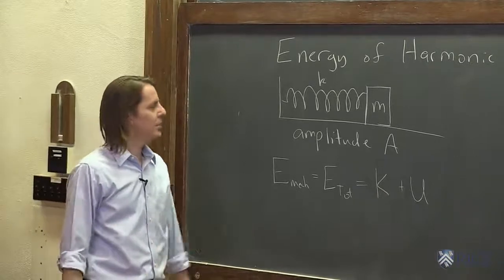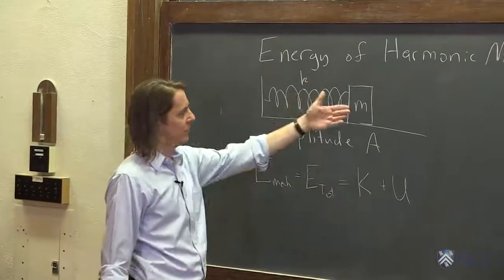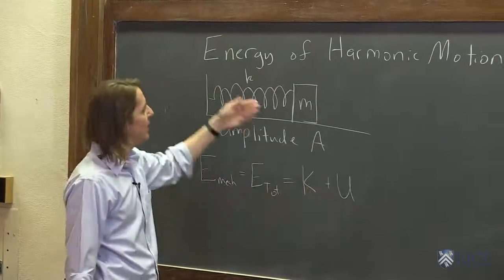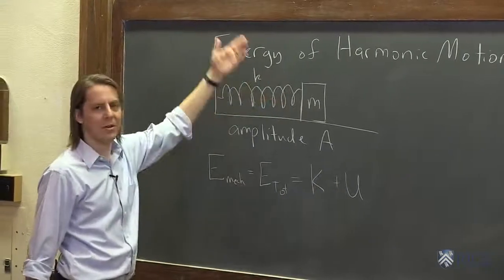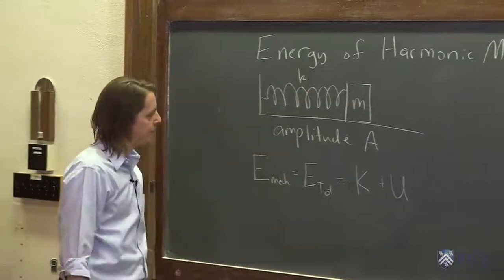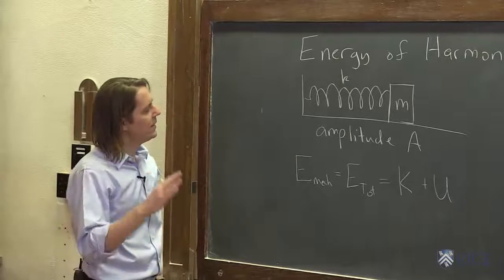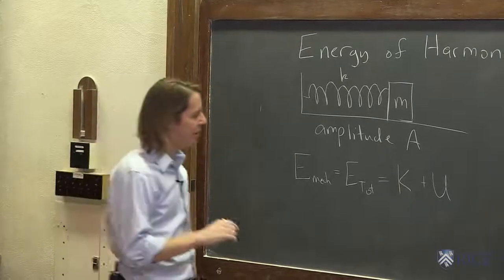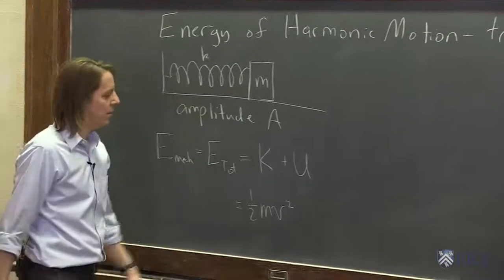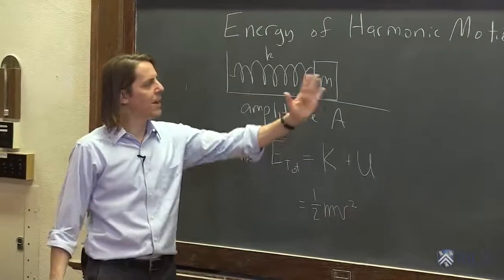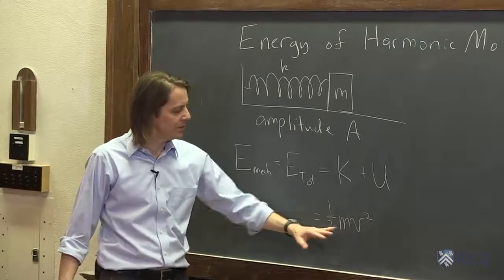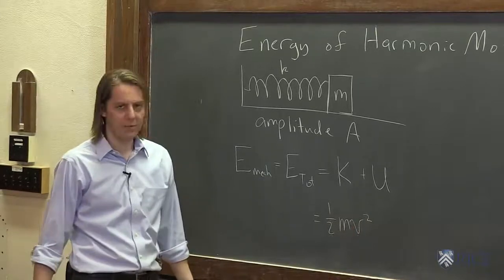It has to equal however much kinetic it has plus however much potential it has. For kinetic, the only mechanism is the velocity. And for potential, all we have is the spring since we're not moving up and down in a gravitational field. In real time, you have one half m v squared. The velocity goes to some maximum value and to zero, but at any instant it has an instantaneous kinetic energy.